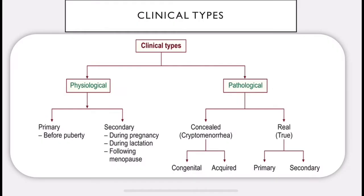Clinical types: they are physiological and pathological. Physiological is further divided into primary and secondary. Primary physiological amenorrhea is before puberty. Secondary physiological amenorrhea is found during pregnancy, during lactation, and following menopause, where there is complete cessation of menstruation.